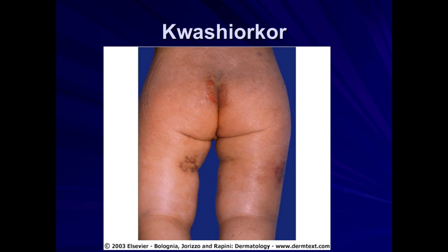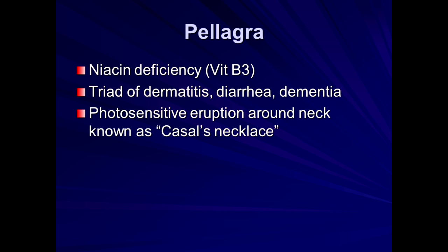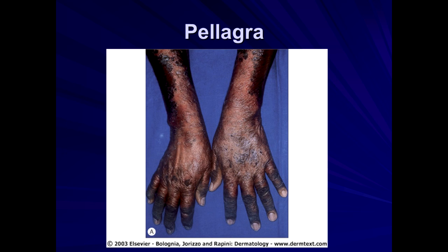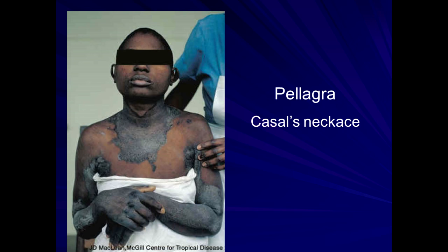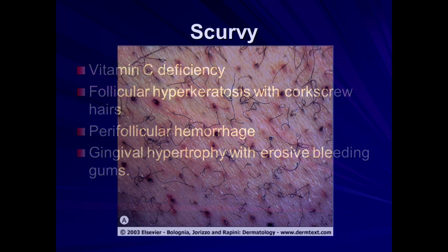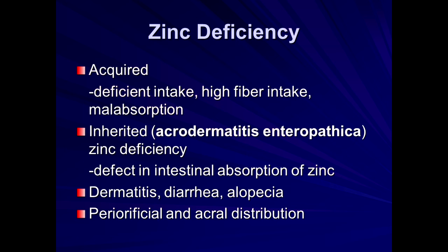Pellagra is niacin (vitamin B3) deficiency — patients get dermatitis, diarrhea, and dementia, and can develop a skin rash on the neck called Casal's necklace — a dermatitis specific to the neckline. Scurvy — vitamin C deficiency — can produce hemorrhagic folliculitis and bleeding gums. Zinc deficiency, also not entirely unheard of, causes dermatitis, diarrhea, and hair loss. It can be acquired from dietary deficit, high fiber intake, or malabsorption.